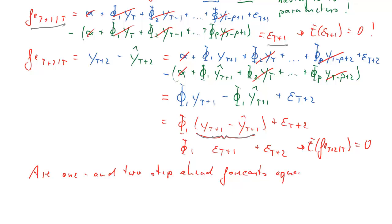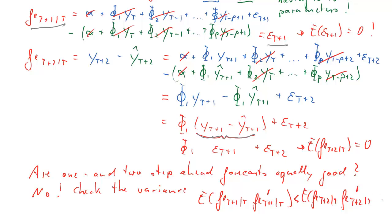Again, the expectation of that is going to be 0. Now, does that mean they're equally good, these two? Both have expectations of 0. The answer is no. The difference is in the variance. It turns out that if you calculate the cross product of forecast error at T plus 1 with itself, remember that's going to be a 2 by 2 matrix, so that's a prime. That's something like the variance of that forecast error. That's going to be smaller than the variance of the two-step ahead forecast error. I'll leave that for yourself to figure out why that is the case. Both of these are going to be k by k matrices.